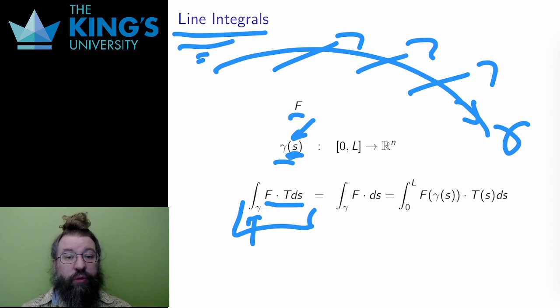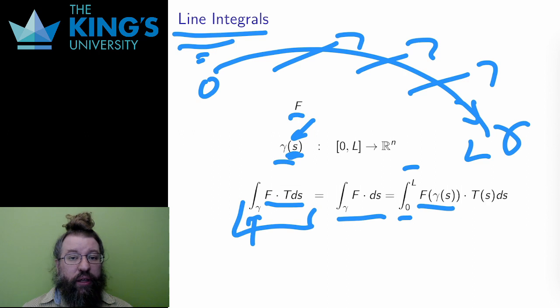It is also often written ∫_γ F · ds. It is defined to be the integral from 0 to L, which is the bounds of the curve, of F(γ(s)), the field evaluated along the curve, dot with T(s), the unit tangent to the curve.